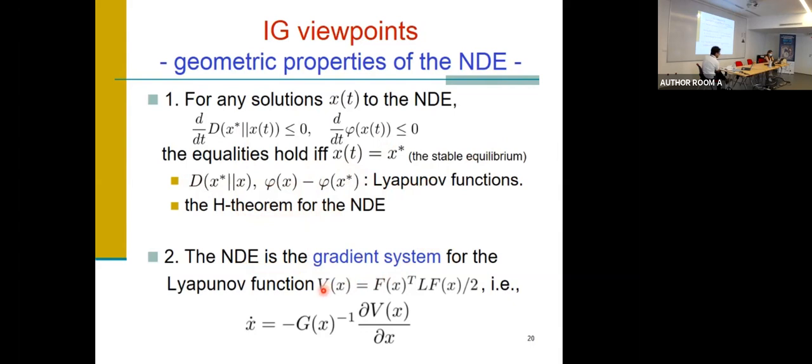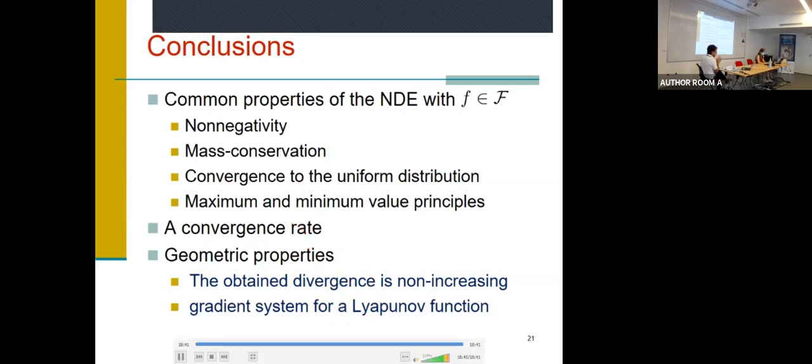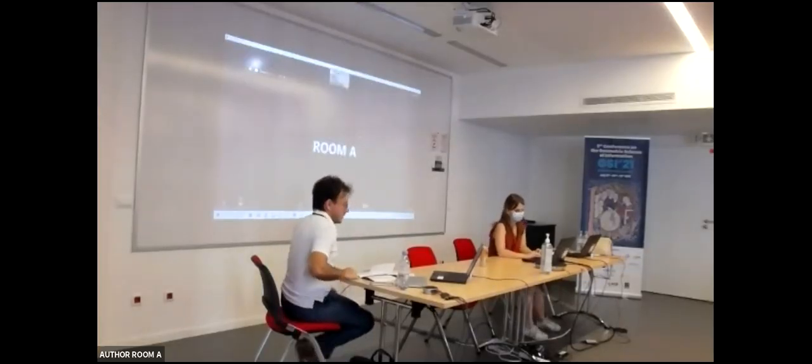So here is the conclusion. We have derived two common properties where the function F is in the class of function F, and a simple convergence rate is derived. And finally we have shown this geometric property. Thank you for your attention.